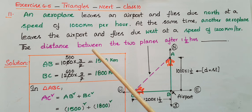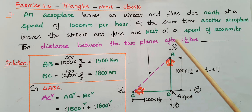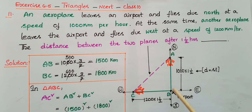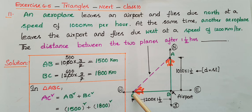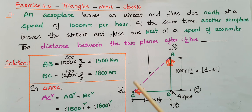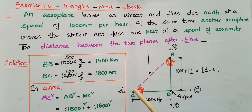We have to find the distance between the two planes after 1 and a half hours. The first aeroplane travels 1000 km in 1 hour, so we need to find the distance in 1.5 hours. Similarly, for the second aeroplane in 1.5 hours, and then find the distance between the two aeroplanes.